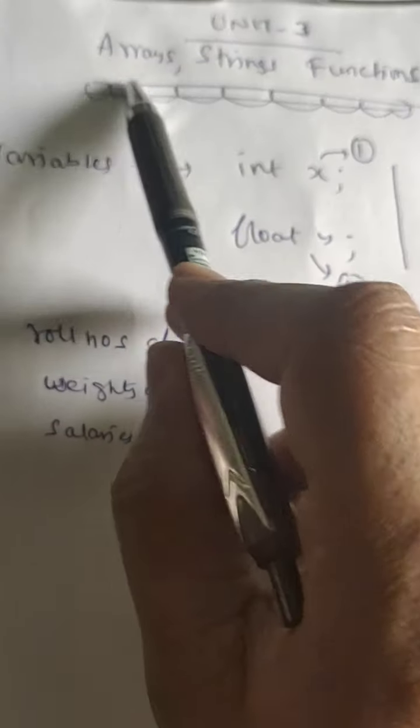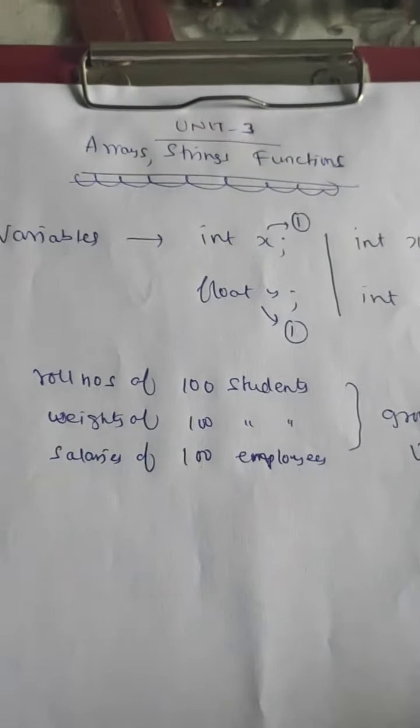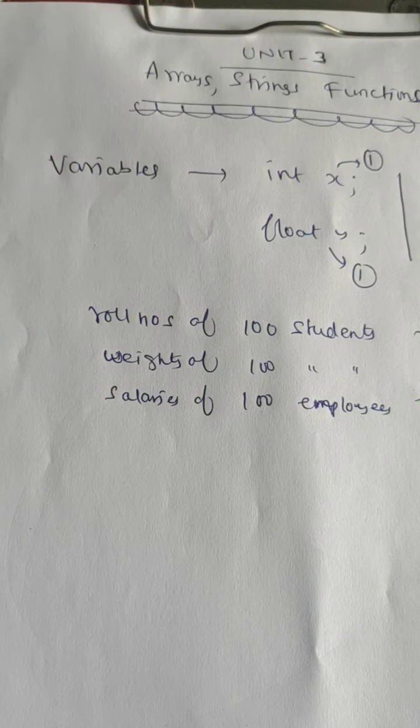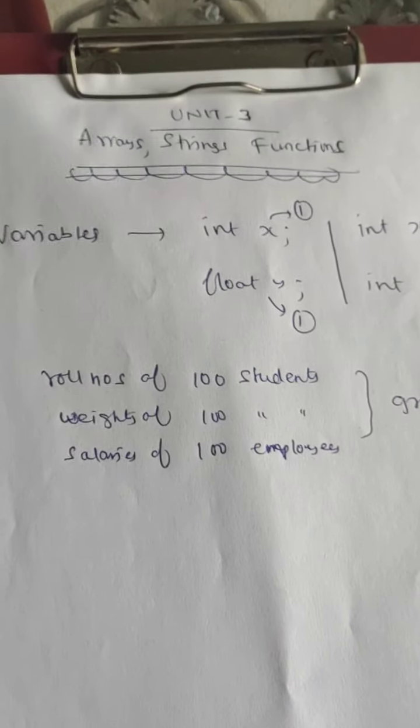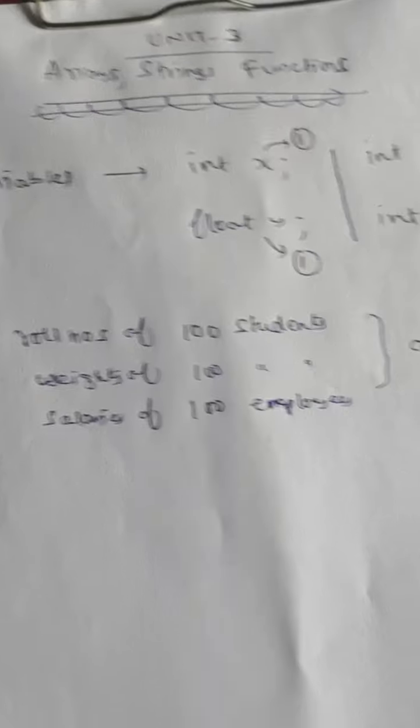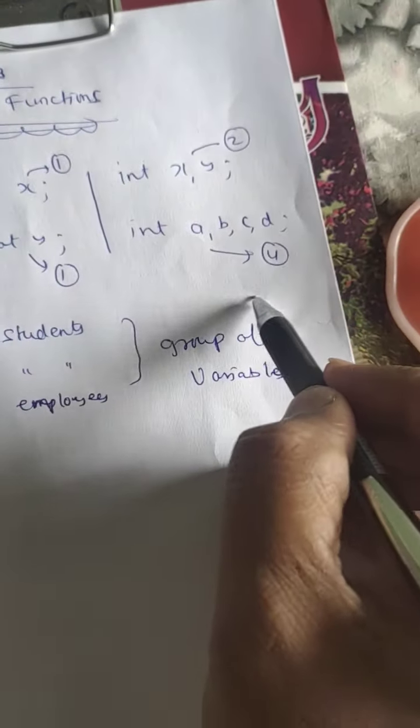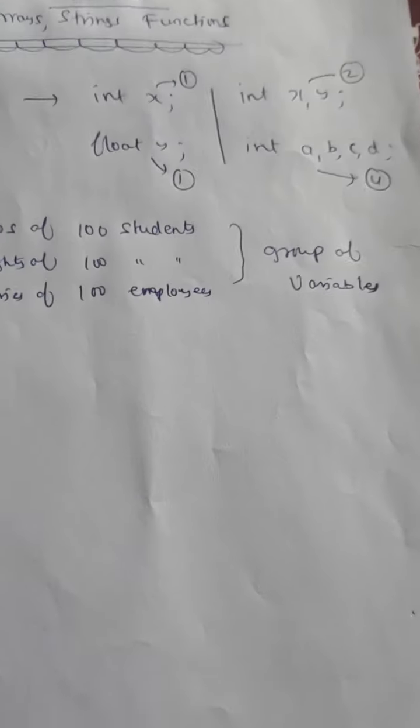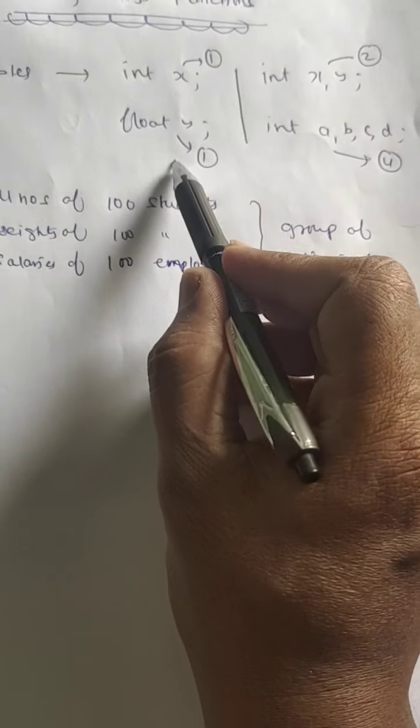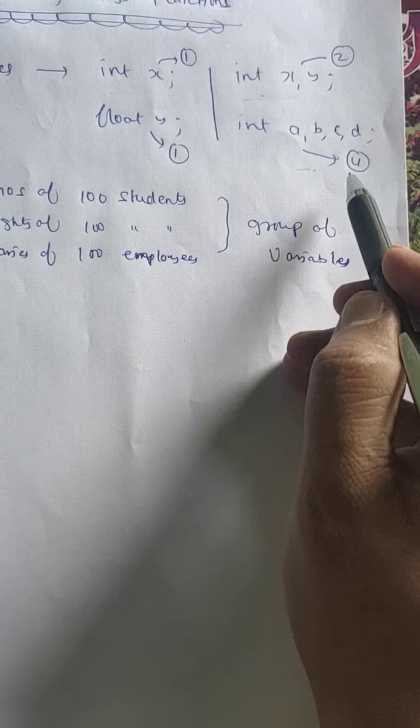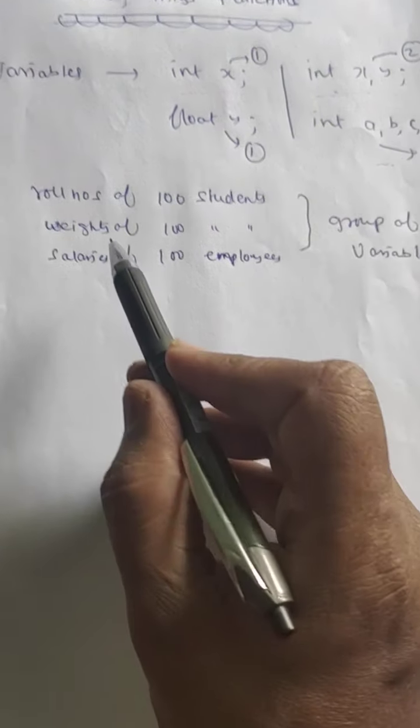Alright, so for strings and functions we are going to discuss. Normally we'll use variables in the program like int x, float y - single variables. So two variables, four variables here. Two variables of integer type, one variable of integer type float, one variable integer.